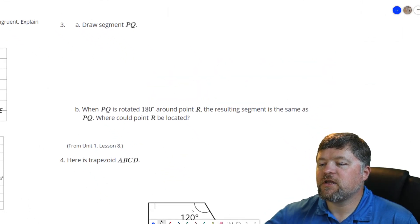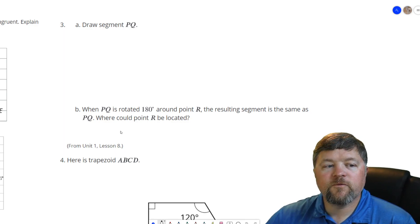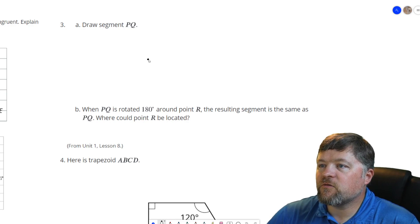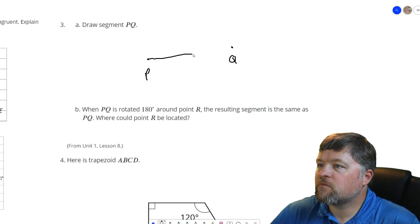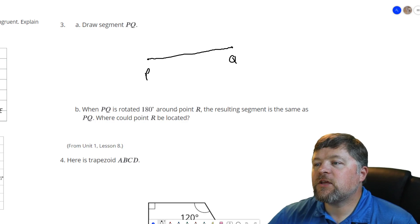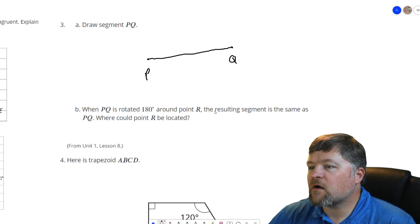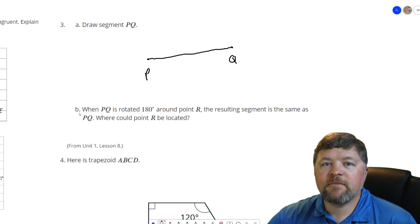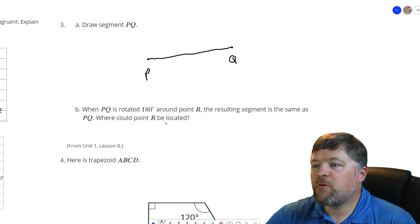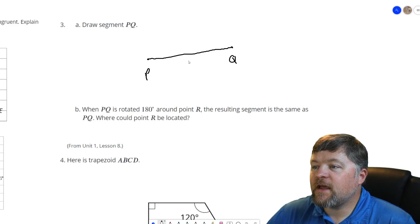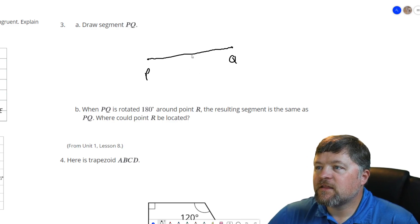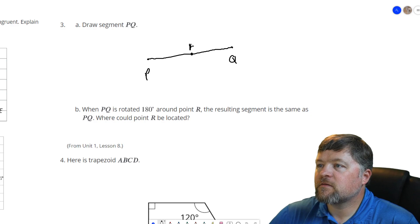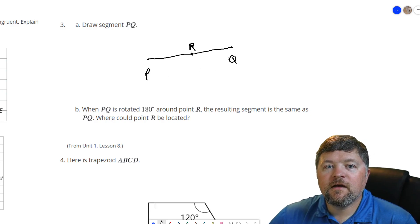Okay, next question here. We'll review from a few lessons ago. Draw segment PQ. When PQ is rotated 180 degrees around point R, the resulting segment is the same as PQ. Where could point R be located? Well, if we were to take this and rotate it 180 degrees around a point, where would we get the same thing? That would have to be the center point. Point R has to be the midpoint of PQ.